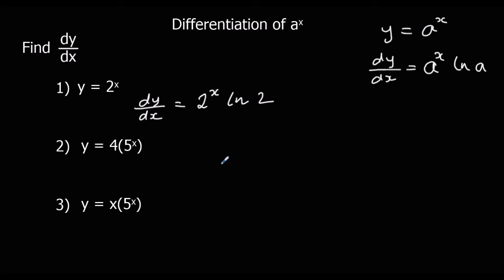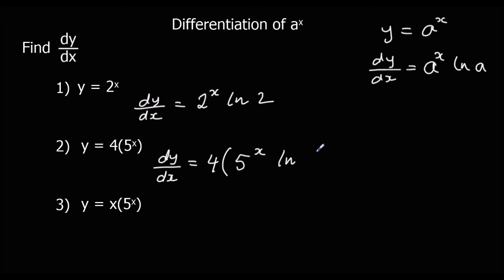In question 2 we've got 4 times 5 to the power of x. But 4 is just a constant, so dy/dx is going to be 4 times the derivative of 5 to the power of x, which is 5 to the power of x ln 5. So dy/dx is 4 times 5^x ln 5, and we can leave our answer like that.